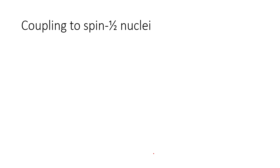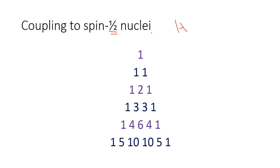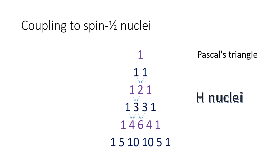To determine the correct option, we need to know the splitting patterns. Coupling to spin-1/2 nuclei such as hydrogen produces splitting that follows Pascal's triangle: 1, then 1:2:1, then 1:3:3:1, then 1:4:6:4:1. Half-spin nuclei obey Pascal's triangle.